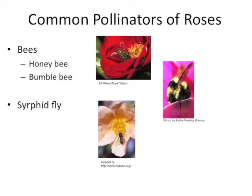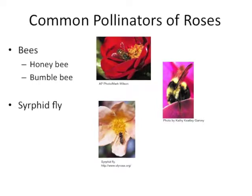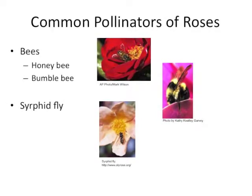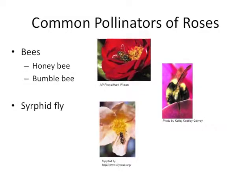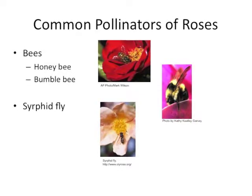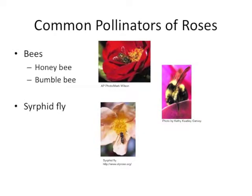Roses are visited by generalist insects — those that collect pollen and nectar from a variety of plants. Some of these generalists include bees, specifically the honey bee and bumble bee, as well as the syrphid fly.